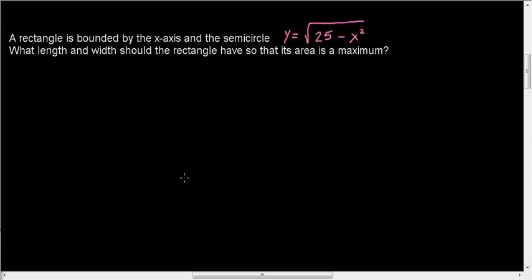In this video we're going to continue with this idea of optimization. I always love these problems when they embed one inside another. A rectangle is bounded by the x-axis and the semicircle given by that function. What length and width should the rectangle have so that its area is a maximum?